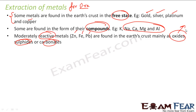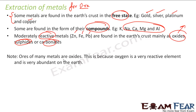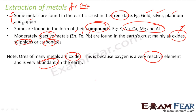Most ores are found in the form of oxides. Why oxides? Because oxygen is a reactive element and it is abundant on earth — oxygen makes up about 50% of the earth's crust. So any reactive metal kept anywhere will react with oxygen. That is why most ores we find are in the form of oxides. Non-reactive metals are found in free state; reactive metals are found in compounds; and moderately reactive metals are found in the form of oxides, sulfides, or carbonates.